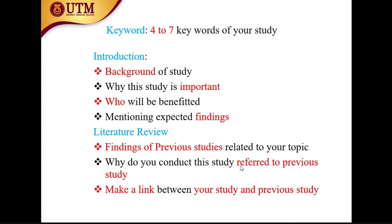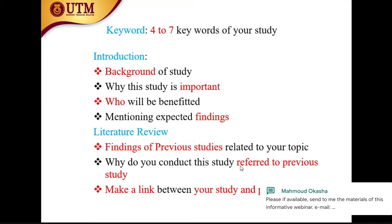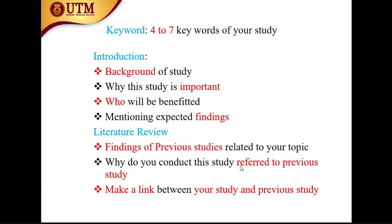You must have articles from Scopus, ScienceDirect, and reputable databases, as this increases acceptance of your article to a journal. Then explain why you are conducting this study by referring to previous studies. For the literature review, you must link your study and previous studies and stop your literature review by making a connection. Otherwise, it will not be a good literature review.